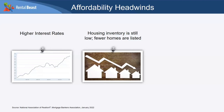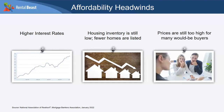High interest rates plus low housing supply equals prices through the roof — and they're not really coming down. All of this creates serious affordability headwinds for would-be buyers. It's not that they don't want to buy — it's that they may not be able to afford it. So you have those would-be buyers sitting on the sidelines, and they need a place to live.